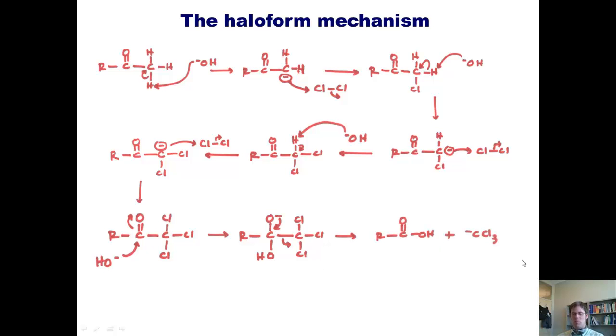This gives us this product and this negatively charged carbon. Negatively charged carbon, as I've spoken in the past, is typically not a stable leaving group, but here it is. Why do you think that is? Well, it's stuck to three intensely electronegative and withdrawing chlorine atoms. Those chlorine atoms are sucking away and helping stabilize this negative charge by induction.